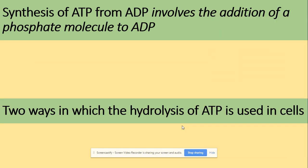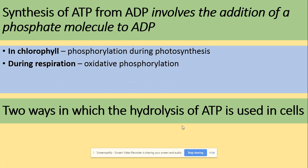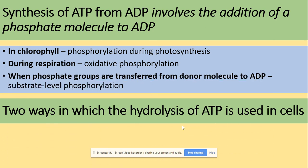Those seven model answers can be linked into essays and used for many questions about ATP. For example: synthesis of ATP involves the addition of a phosphate molecule to ADP. Where does that take place? In chloroplasts during photosynthesis — photophosphorylation — and in respiration via oxidative phosphorylation, where phosphate groups are transferred from a donor molecule to ATP, for example substrate-level phosphorylation.